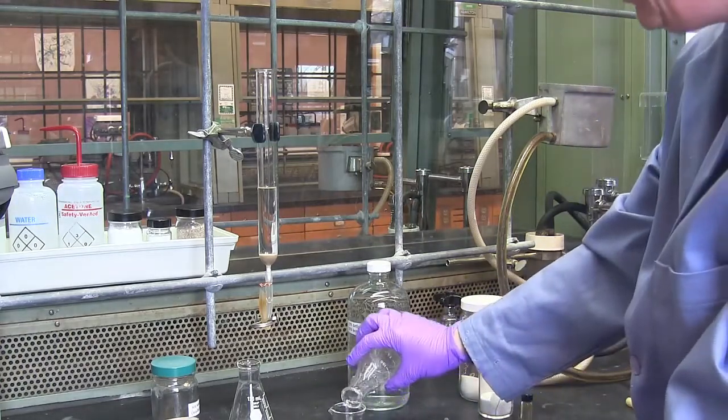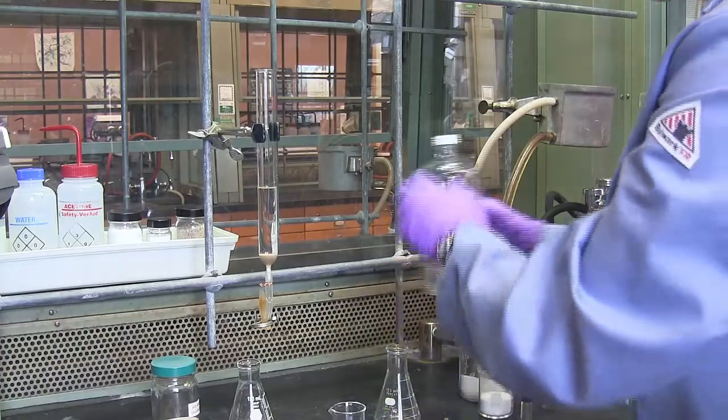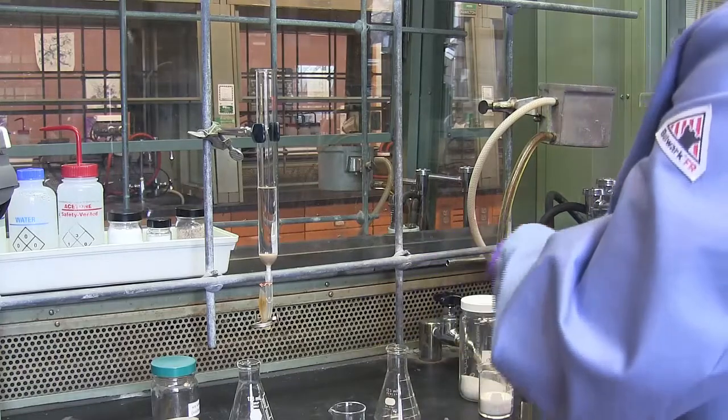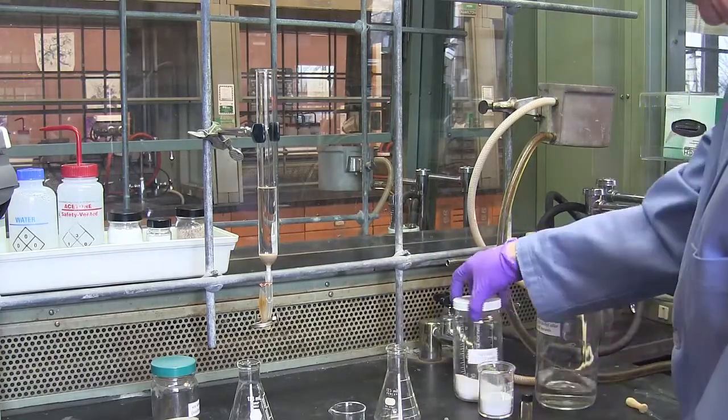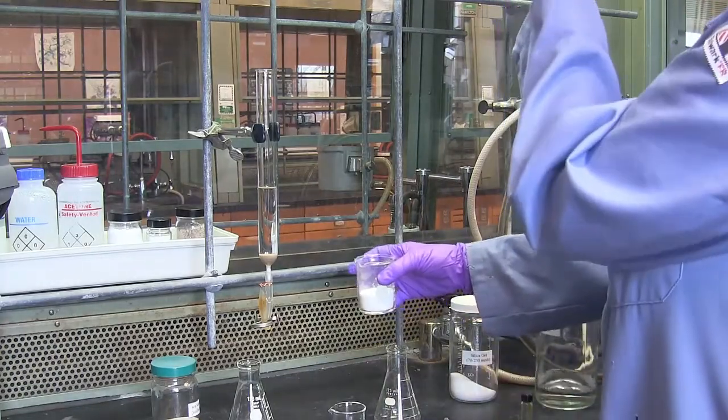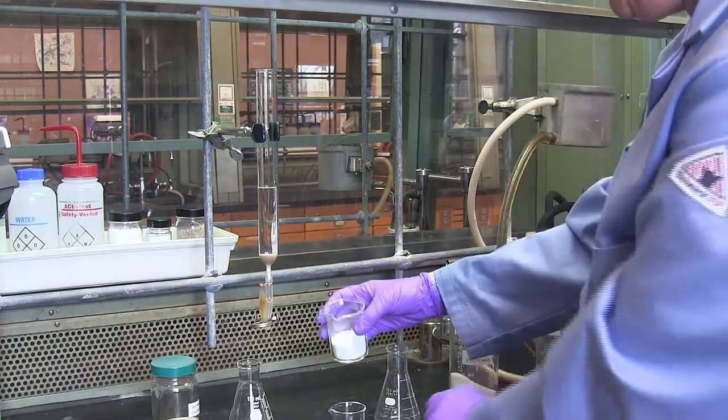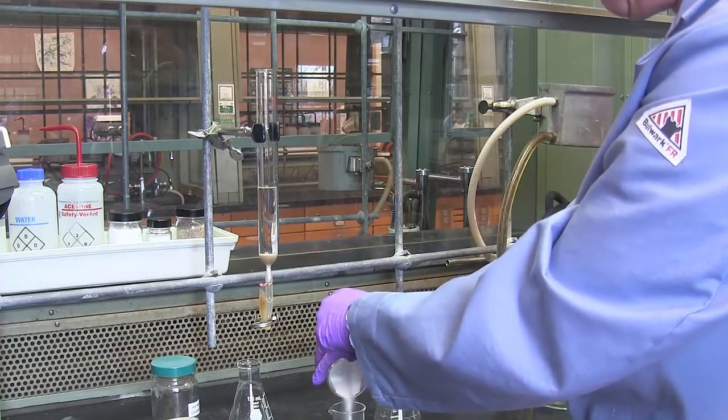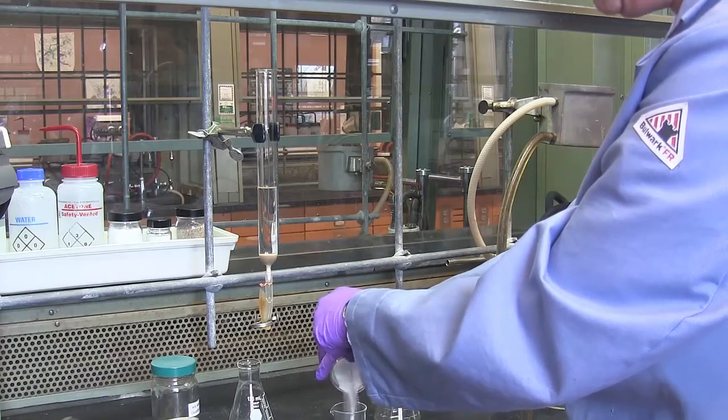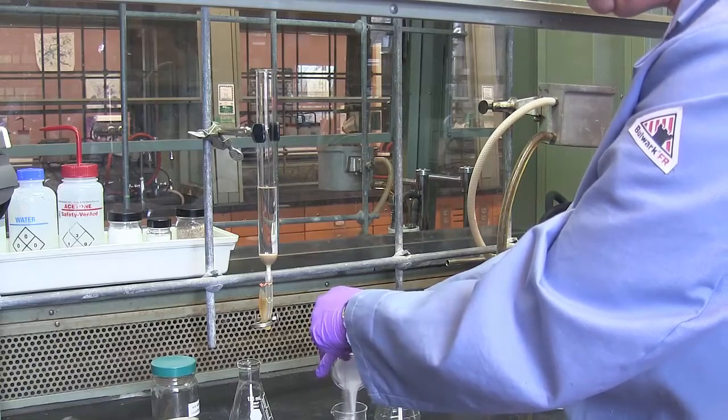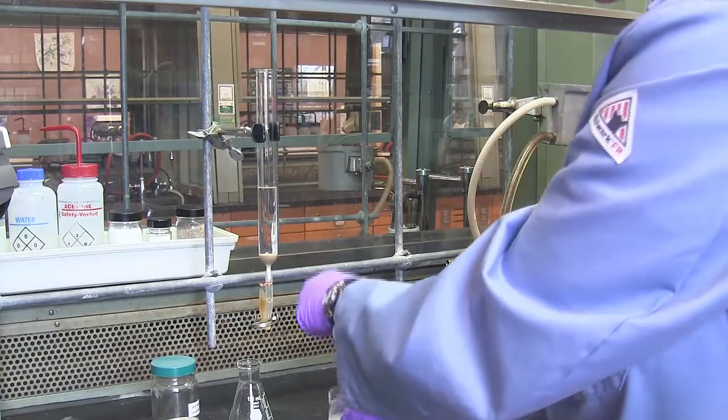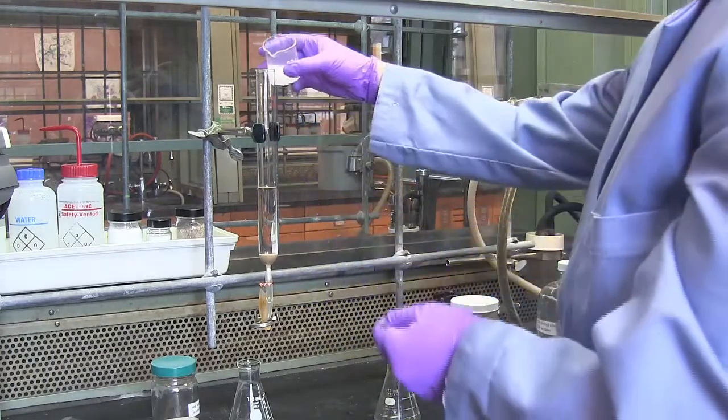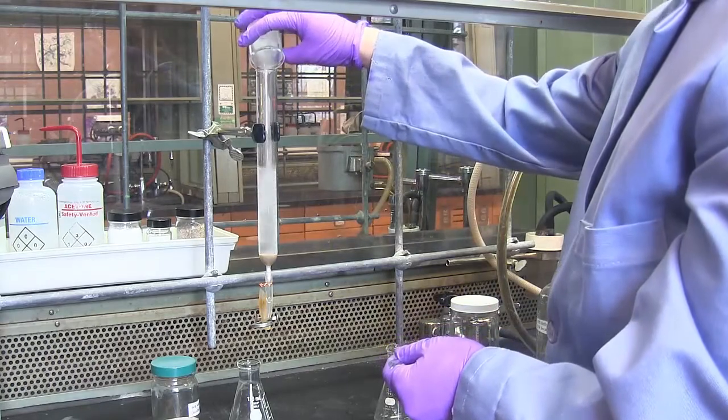To prepare a slurry, I add some of my eluent to a beaker, and then add some silica gel to the eluent. I still want the slurry that I'm making to have a flow to it so I can pour this into the glass column. When it starts getting kind of thick, I stop adding silica and begin to pour it in.